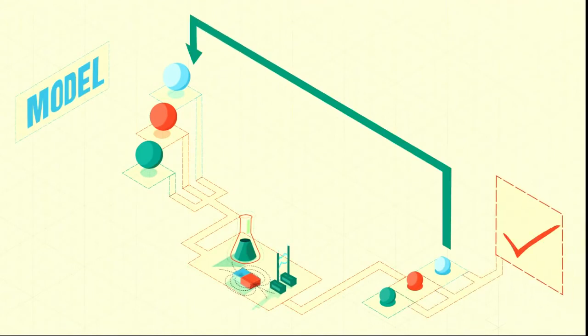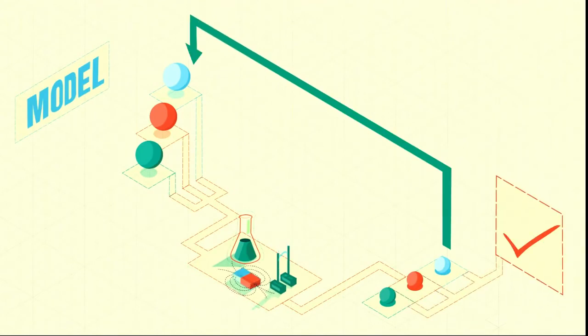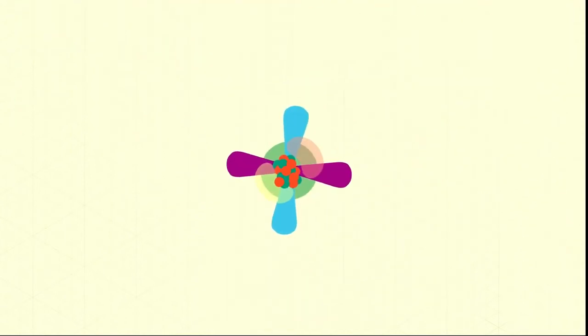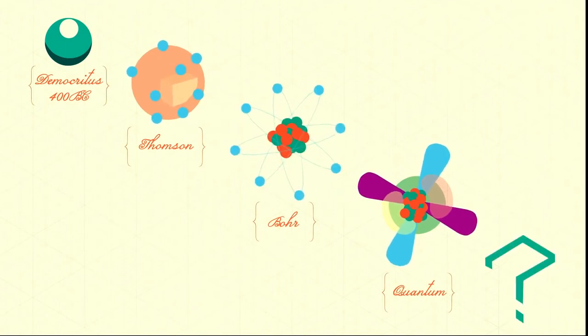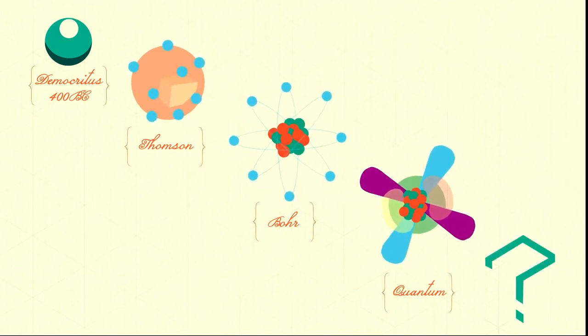If they do, great. If they don't, it might be time for a new model. We've had lots of very different models for atoms since Democritus in 400 BC, and there will almost certainly be many more to come. Okay, tangent over.